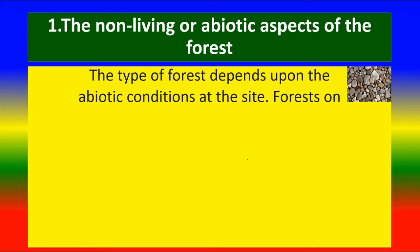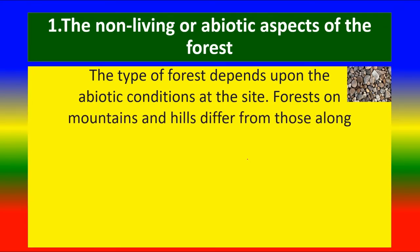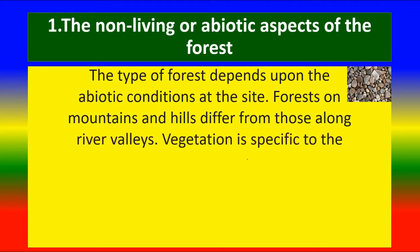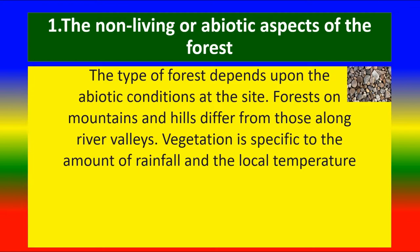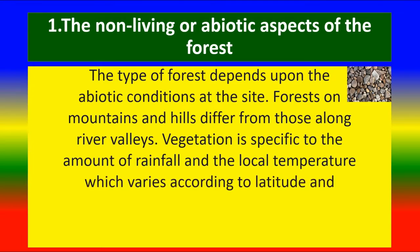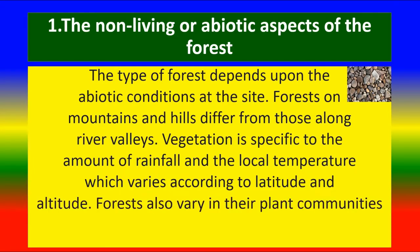The type of forest depends upon the abiotic conditions. Forests on mountains and hills differ from those along river valleys. Vegetation is specific to the amount of rainfall and local temperature, which varies according to latitude and altitude.